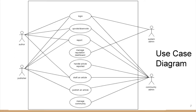This is the use case diagram. There are authors, publishers, community admin, and system admin. An author can upload, download, report, or draft an article. A publisher can additionally publish an article. The community admin handles reported articles — approving or rejecting them — and can manage a community by adding, removing, or updating users. The sole purpose of the system admin is to manage the reputation dashboard, which contains a set of reputation values for the system.